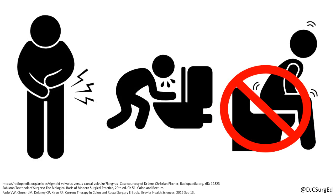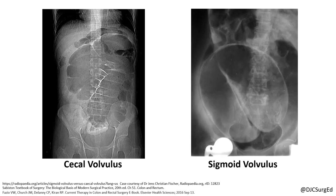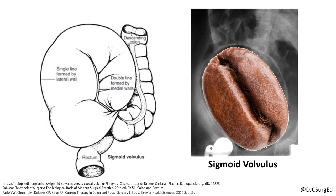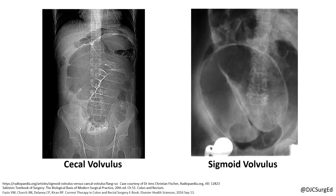The most common radiographic finding is the bent inner tube appearance, or coffee bean sign. The colon twists around its base and haustral markings point to the opposite quadrant. For cecal volvulus, the colon points to the left upper quadrant, whereas in sigmoid volvulus, it points to the right upper quadrant.